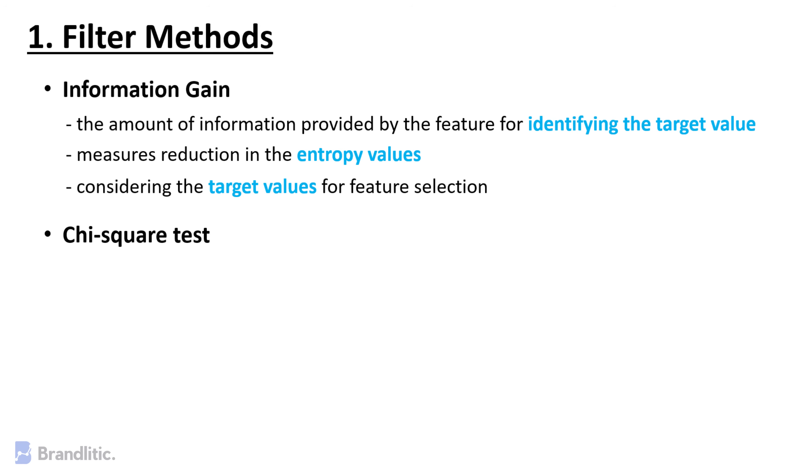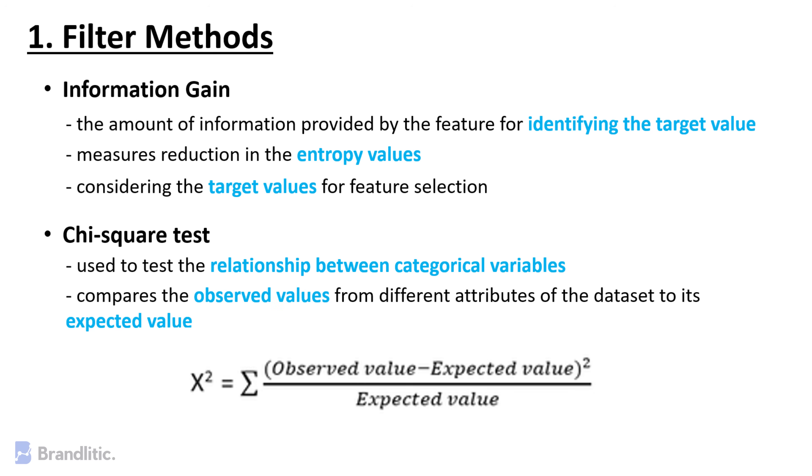G-Square Test. G-Square method is generally used to test the relationship between categorical variables. It compares the observed value from different attributes of the dataset to its expected value.